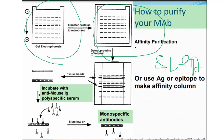The final step is characterization and storage. Biochemical and biophysical characterizations are performed to confirm the desired specificity of the antibodies obtained. The monoclonal antibodies are characterized for their ability to withstand freezing and thawing, and are then stored at appropriate temperatures. This completes the process of monoclonal antibody production.